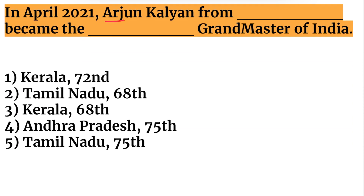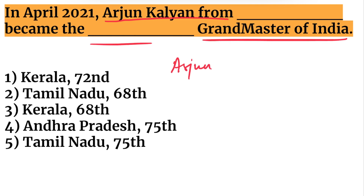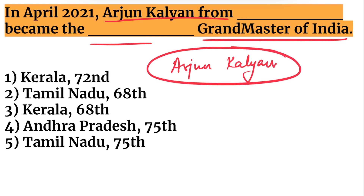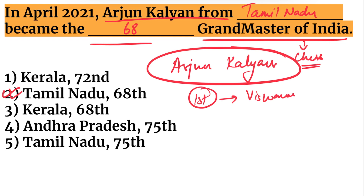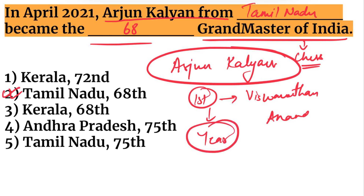In April 2021, Arjun Kalyan from Tamil Nadu became the 68th Chess Grandmaster of India. The term 'Grandmaster' is associated with the sport of chess. Vishwanathan Anand was the first Grandmaster of India — the year in which he became Grandmaster is your homework.